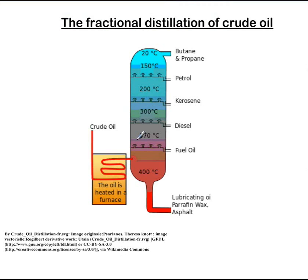This tower is called a fractional distillation tower. It's a cooling tower where at the bottom the temperature is 400 degrees Celsius and as we go higher the temperature becomes less — 370, 300, 200, 150, 20 degrees Celsius. So as we go higher up in the tower the temperature decreases.